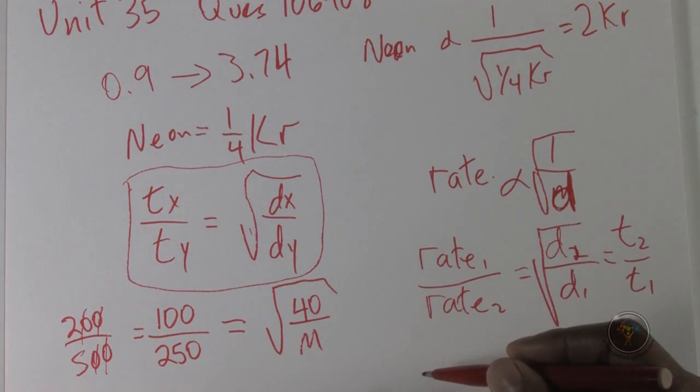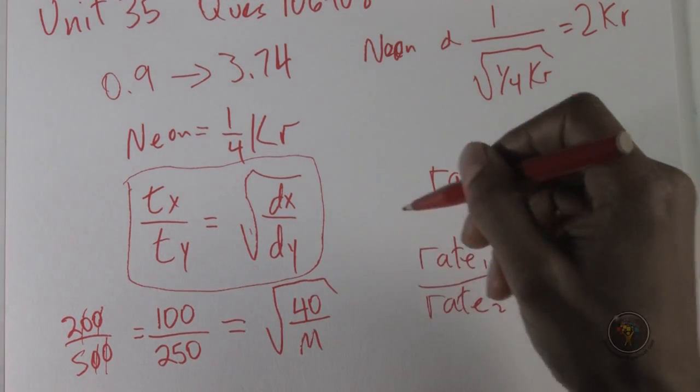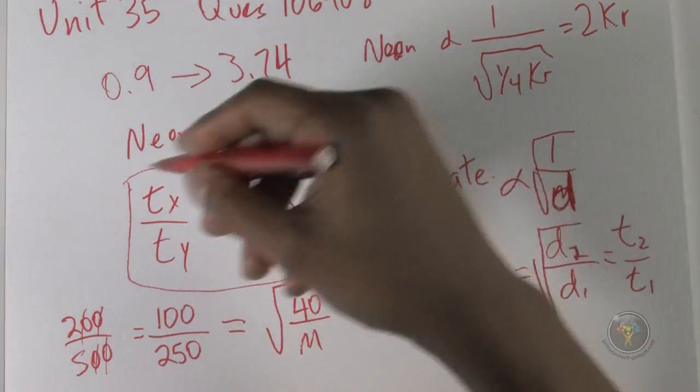So we have two over five is equal to the square root of 40 over M. So we'll just square both sides.